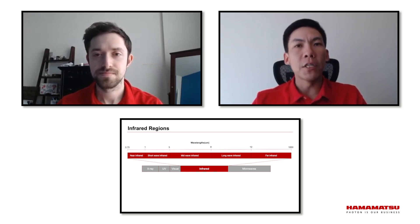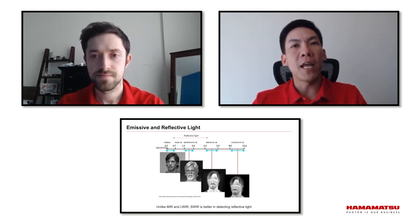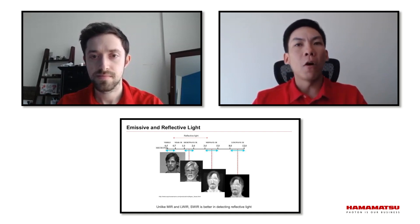There are multiple definitions, but typically people define near-infrared from 700 nanometers to 1,000 nanometers. Shortwave infrared starts from 1,000 nanometers to 3 micron. Mid-infrared is from 3 micron to 8 micron, and longwave infrared, 8 micron to around 25 micron. And then over that, it's called far infrared.